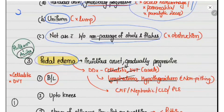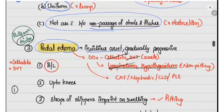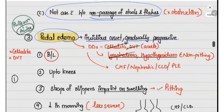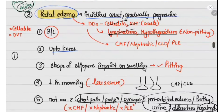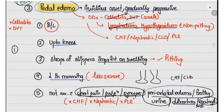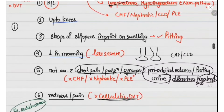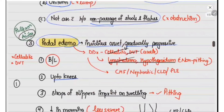Following ascites, the patient developed pedal edema. It was insidious in onset, gradually progressive, bilateral, present up to the knees, and the straps of slippers were imprinted on the swelling. The pedal edema is less in the morning and progresses as the day progresses. It is not associated with chest pain, palpitations, syncope, periorbital edema, frothy urine, diarrhea, malnutrition, or shortness of breath, and there is no history of redness or pain in the limbs. Whenever a patient presents with limb swelling, you first need to determine whether it is unilateral or bilateral.